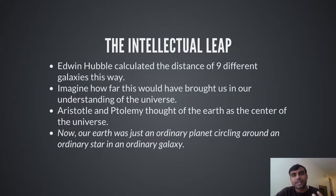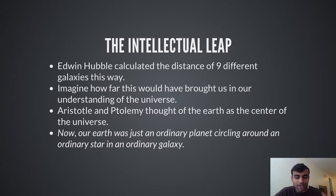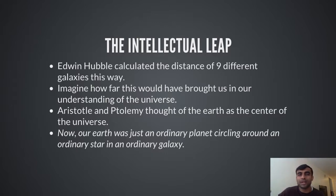Hubble calculated the distance of nine different galaxies this way. Consider how far this brings us — mere 2,000 years ago Aristotle and Ptolemy thought Earth was the center of the universe and that the sun, moon, and stars went around the Earth. Now our Earth was just an ordinary planet orbiting an ordinary sun, which was part of an ordinary galaxy, and there were billions of galaxies in the universe.